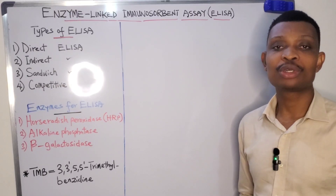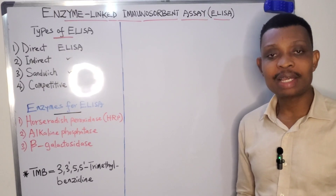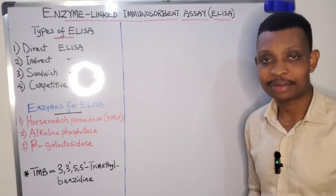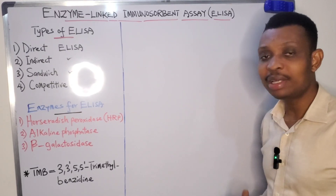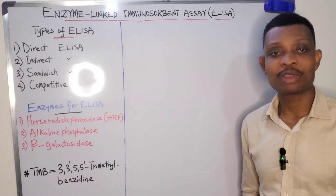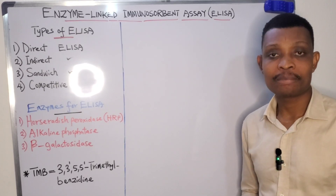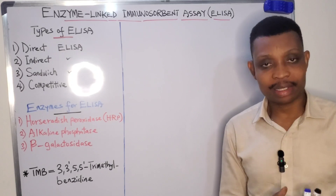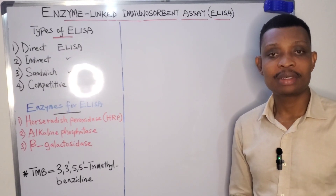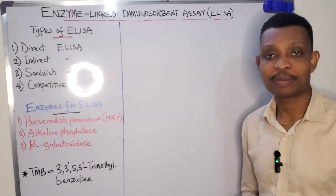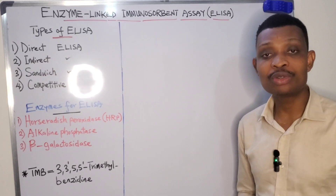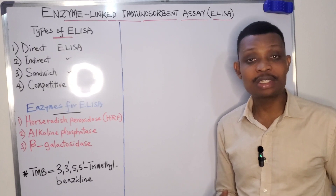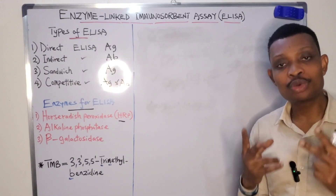In today's lecture we'll be talking about the enzyme-linked immunosorbent assay, also referred to as ELISA. ELISA is a laboratory technique that can be used to detect and also quantify specific molecules, and these molecules include antigens, antibodies, hormones, proteins, and peptides.